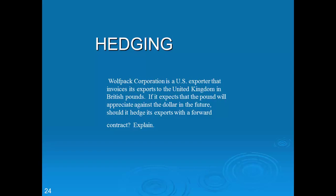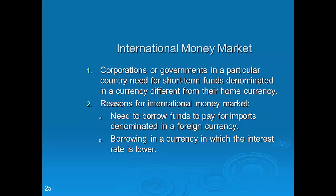The international money market is the market for short-term borrowings — securities with maturities less than one year — denominated in a currency different from the borrower's home currency. Corporations or governments in a particular country that need short-term funds in a foreign currency can go to the international money market. For example, if Microsoft needs 100 million euros quickly, it can issue securities and borrow short-term in this market.